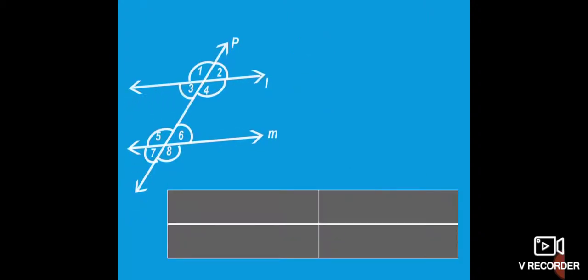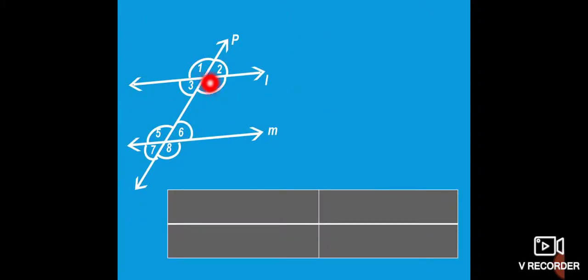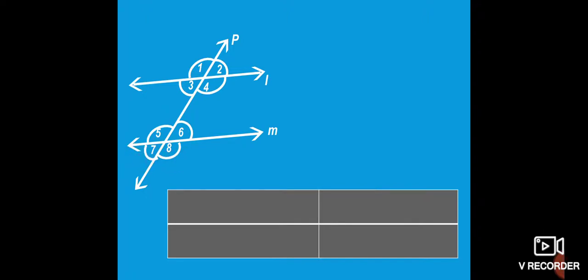Let's discuss those special names for angles made by a transversal. Here you can see line L, line M, and line P as the transversal. You can see eight angles on this screen: angle 1, angle 2, angle 3, angle 4, angle 5, angle 6, angle 7, and angle 8.